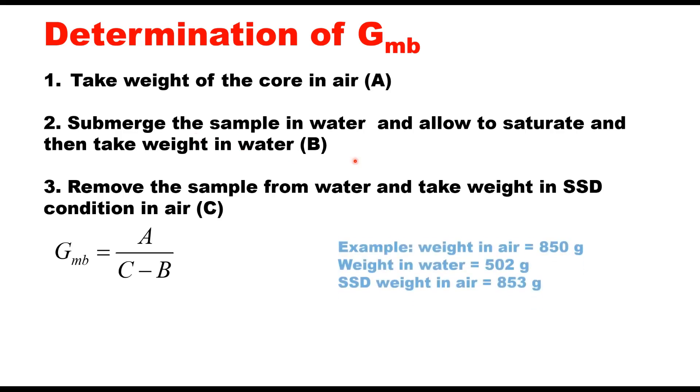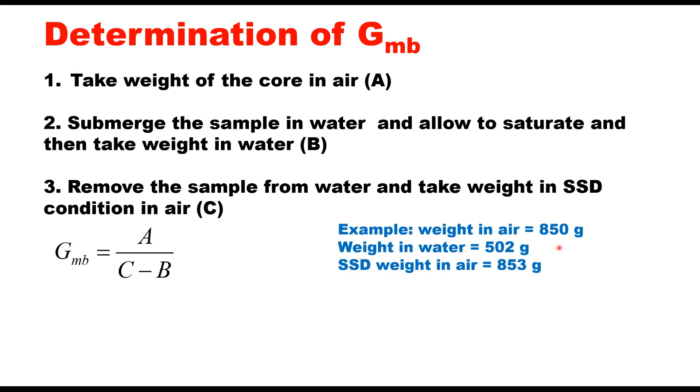For example, if weight of the sample in air is 850 grams, weight in water is 502 grams, and SSD weight in air is 853 grams, then this GMB will be 850 upon 853 minus 502, that is 2.421 grams per centimeter cube.